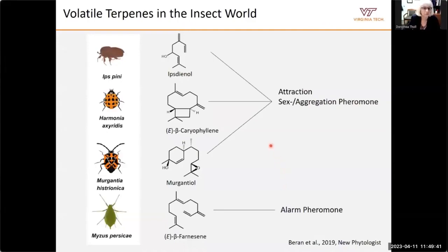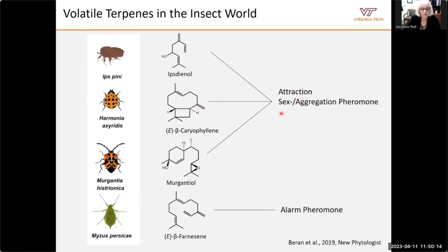We are particularly interested in volatile compounds that belong to the class of isoprenoids or terpenes — the largest group of natural products or semiochemicals in nature, and they are common in insects. Here are a few examples of volatile terpenes: an aggregation pheromone of the pine engraver beetle Ips pini is a monoterpene (10-carbon terpene compound); several sesquiterpene volatiles contain 15 carbons and can serve as sex or aggregation pheromones or alarm pheromones. Morganiol, for instance, is an aggregation pheromone of the harlequin bug Murgantia histrionica, which we'll discuss more today.